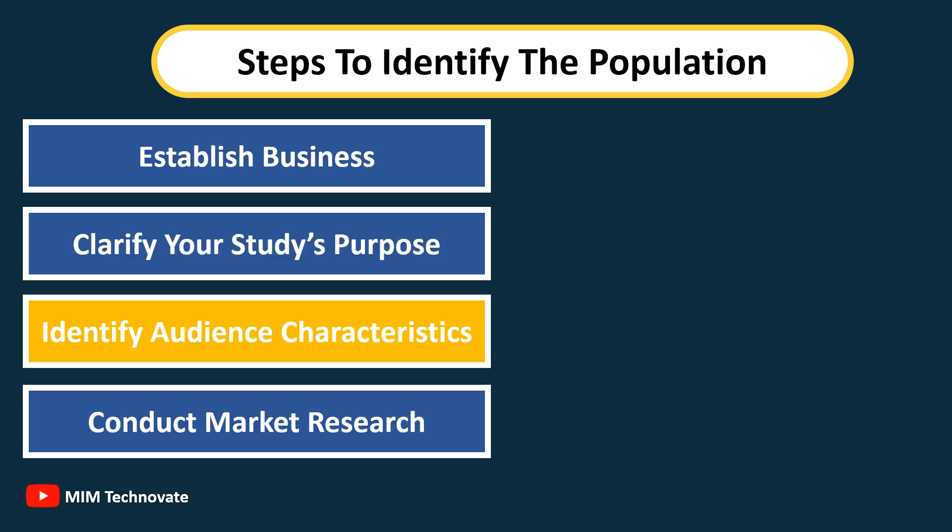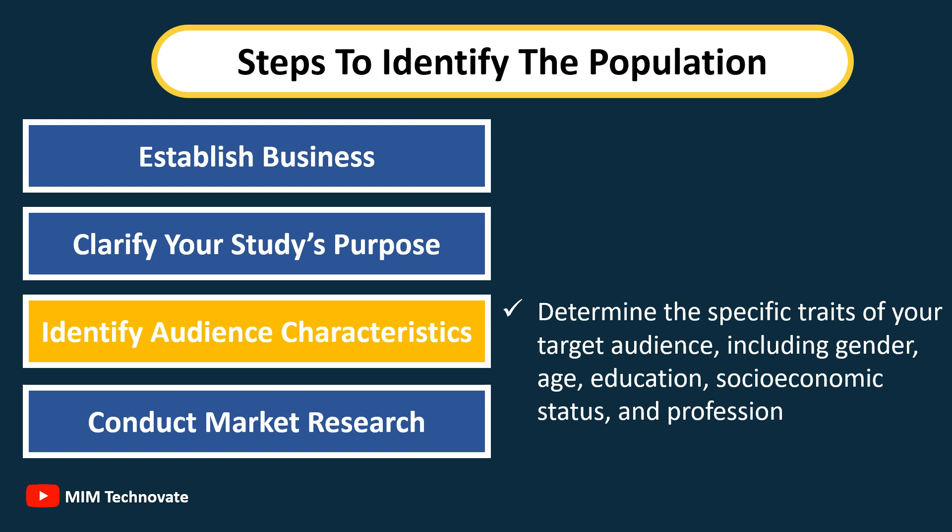Step three: Identify audience characteristics. Determine the specific traits of your target audience including gender, age, education, socioeconomic status, and profession.